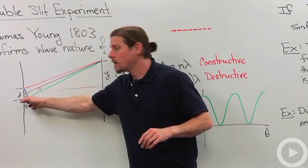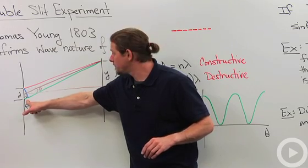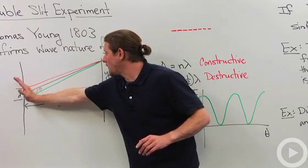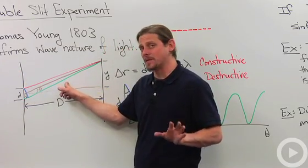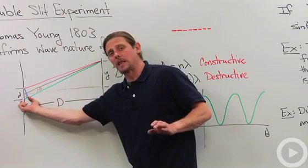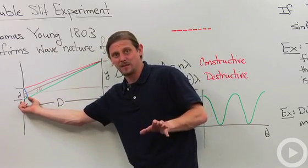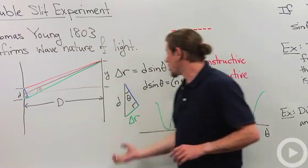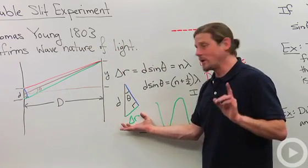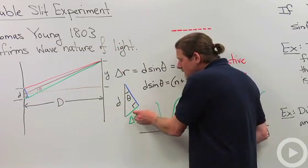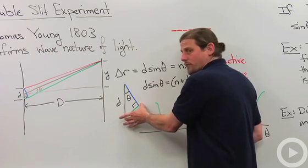Now we can determine this difference in distance approximately by drawing the following triangle right here. So we draw that down and we say the red and the green line are about the same distance, and then we've got this little bit of excess from the bottom slit. So if we blow up this triangle, what we see is that this Δr, this difference in distance,